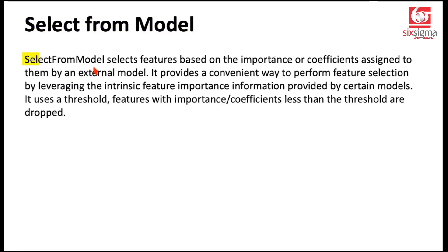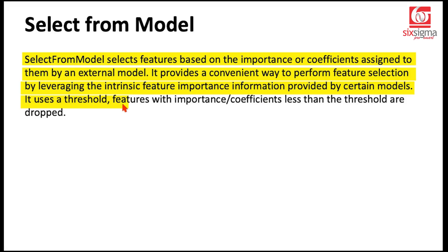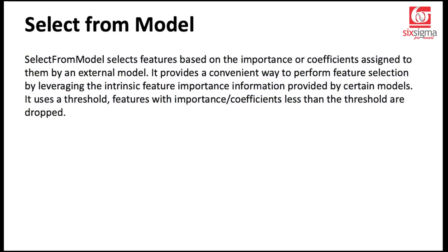Next is select from model. Select from model selects features based on the importance or coefficients assigned to them by an external model. Like recursive feature elimination, it uses a model, but it does not drop features recursively. The difference is that it uses a threshold — any feature with importance or coefficients less than the threshold is dropped all at once, not recursively.